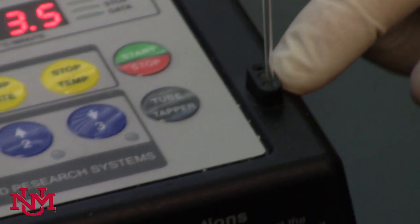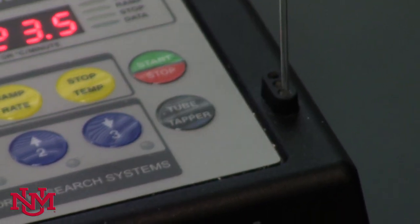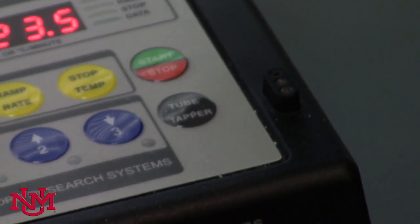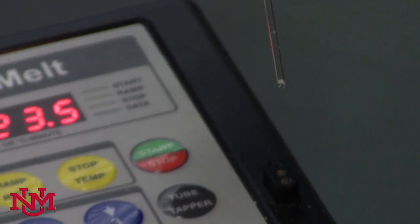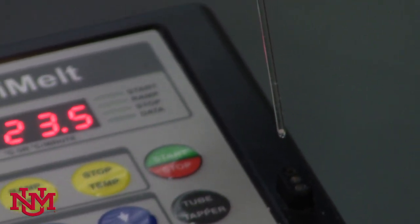Once you have it there, you can touch the button labeled tube tapper. Watch it shake the sample down from the top all the way down to the bottom. We don't need to have a whole lot of sample. The smallest amount that's visible in the capillary tube is all you need to obtain a melting point.